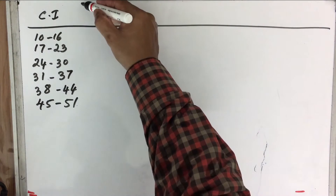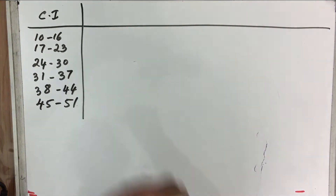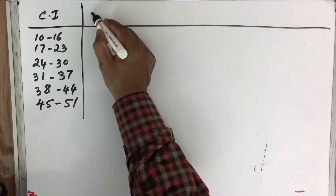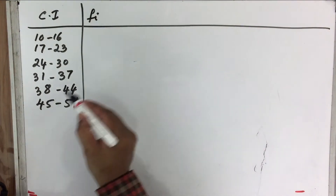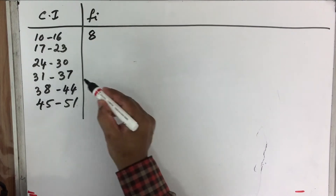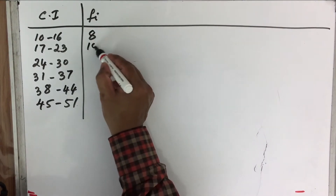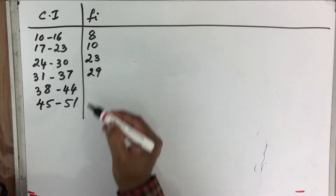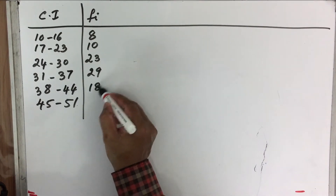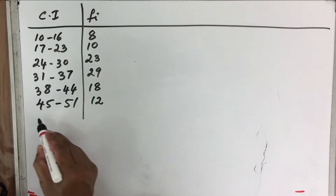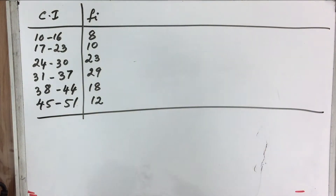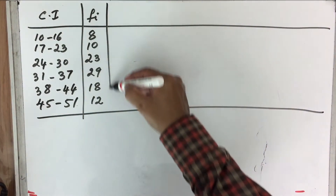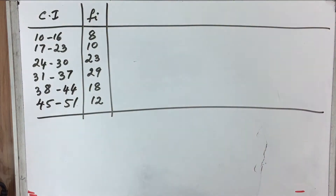Let us put the data in a column. The frequency (FI) values are: 8, 10, 23, 29, 18, and 12. This is the data that we have. Now, how do we calculate mean deviation for this?